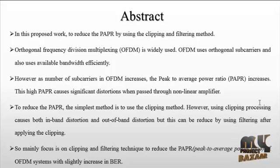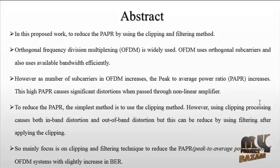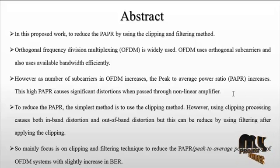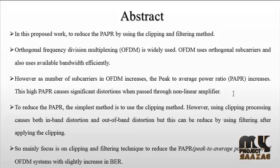This high PAPR causes significant distortion when passed through a non-linear amplifier. To reduce the PAPR, the simplest method is to use the clipping method. However, clipping causes both in-band distortion and out-of-band distortion. This can be reduced by applying filtering after clipping. The main focus is on the clipping and filtering technique to reduce the PAPR — the peak to average power ratio of the OFDM system — with a slightly increased BER.